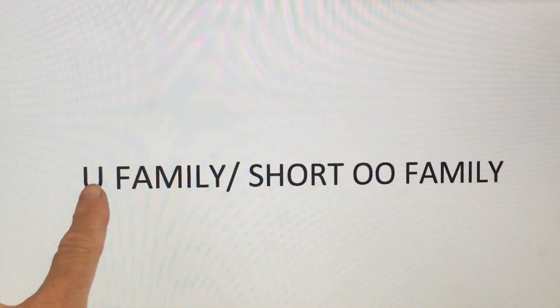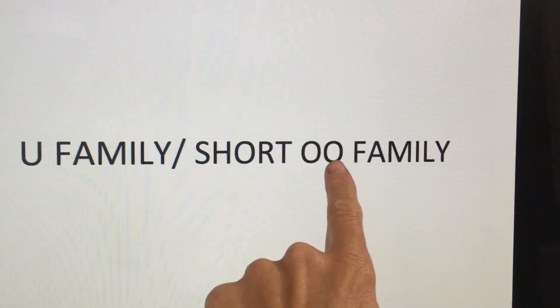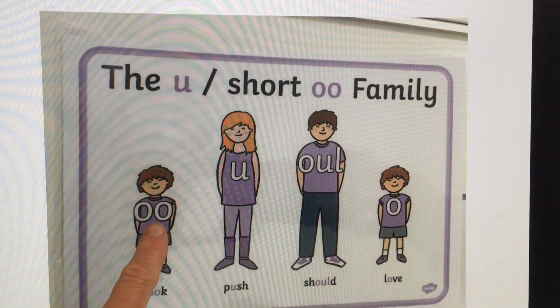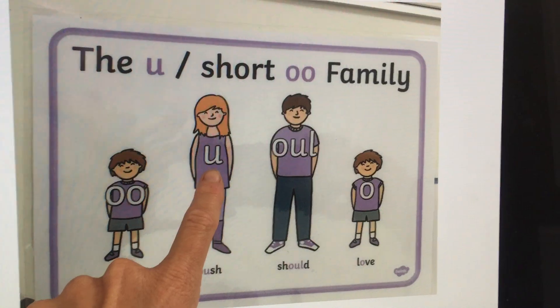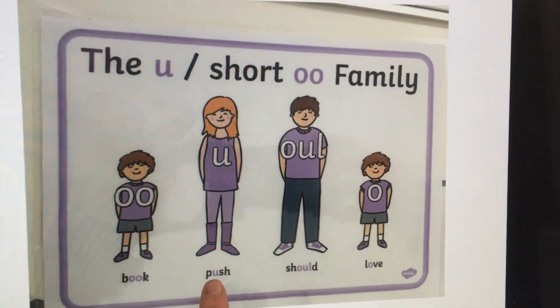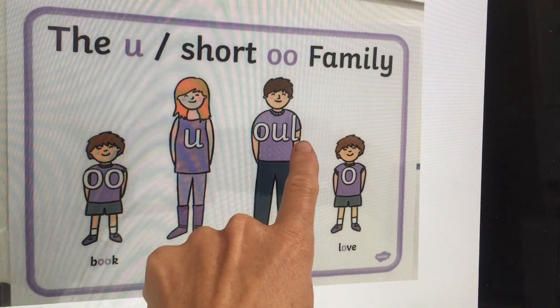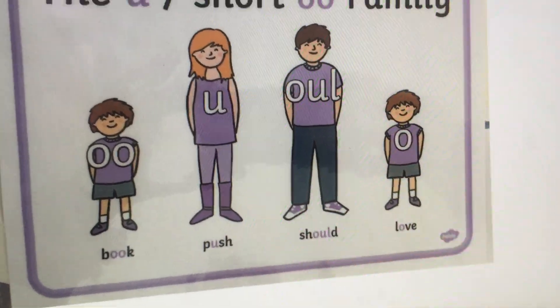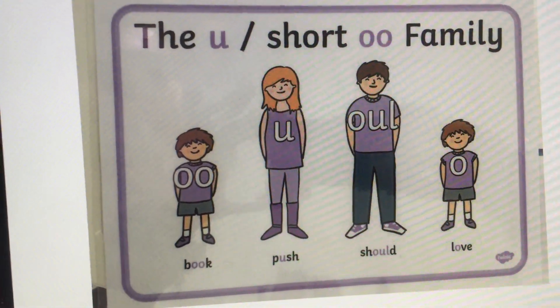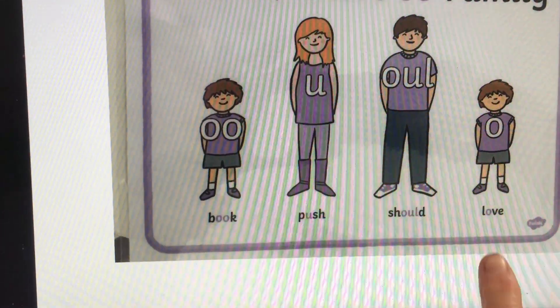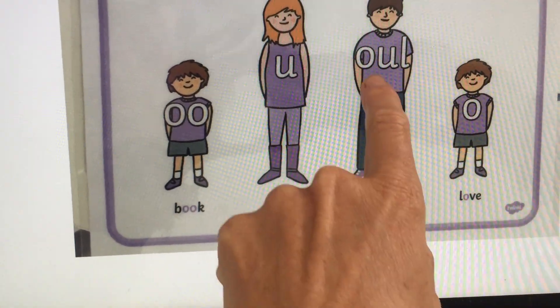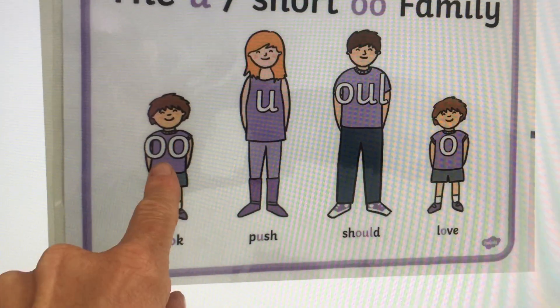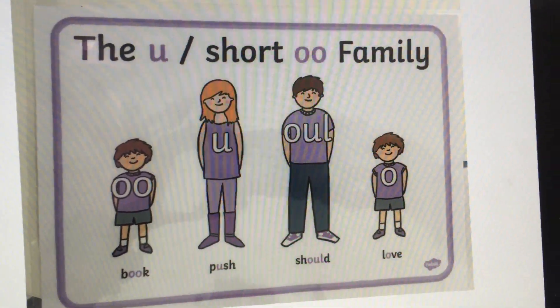In phonics today we're going to be looking at the short U family. This family looks like this: we've got the U as in book, the U with a single U as in push, the O-U together making an U sound as in should, and the letter O making an U sound in some words. We've got the examples U as in love, U as in should, U as in push, and U as in book.